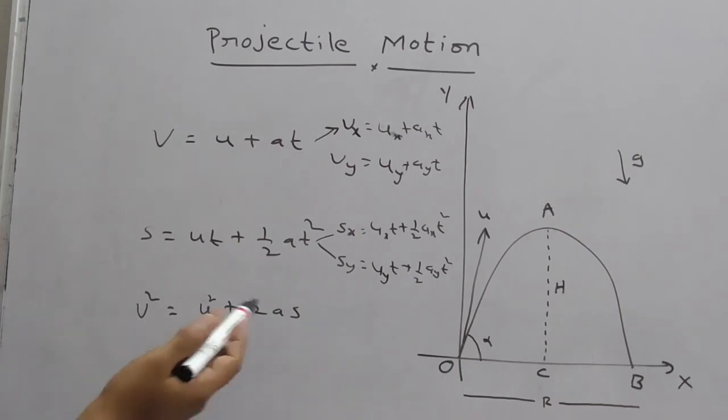ux and uy: what are they? Initial velocity with respect to x-axis, initial velocity with respect to y-axis, like that.